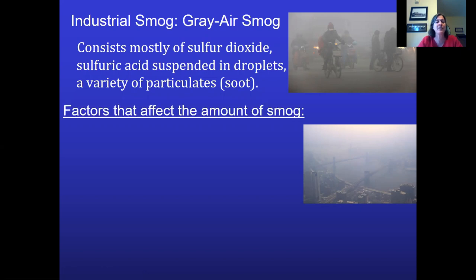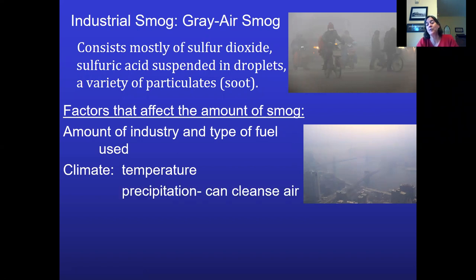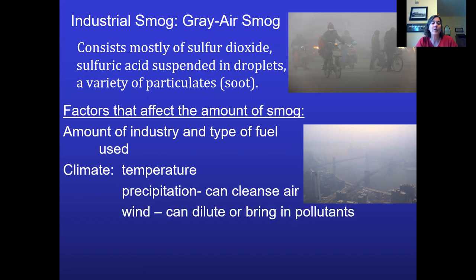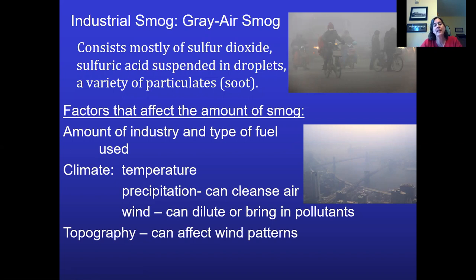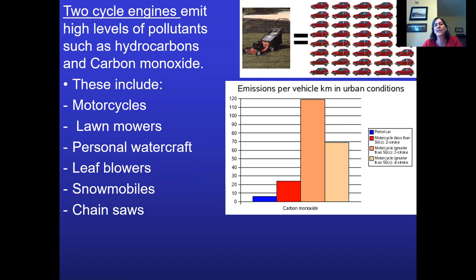Factors affecting smog include: amount of industry, whether you're burning coal or making steel; temperature, since hot sunny days cause more photochemical smog; precipitation, since rain washes pollutants out; wind, which can blow pollutants elsewhere; and topography — if mountains or tall hills surround your city, you'll have trouble dispersing pollution even with wind. Also worth noting: two-cycle engines like motorcycles, lawnmowers, personal watercraft, leaf blowers, snowmobiles, and chainsaws are not regulated like cars and put out an awful lot of carbon monoxide emissions.